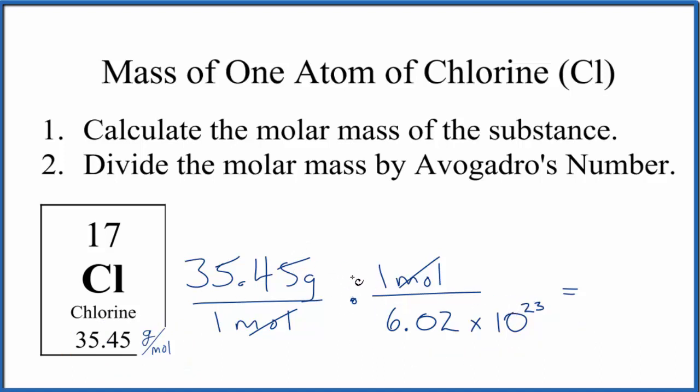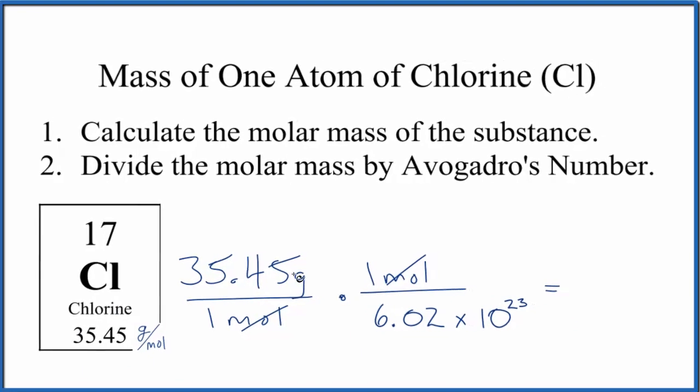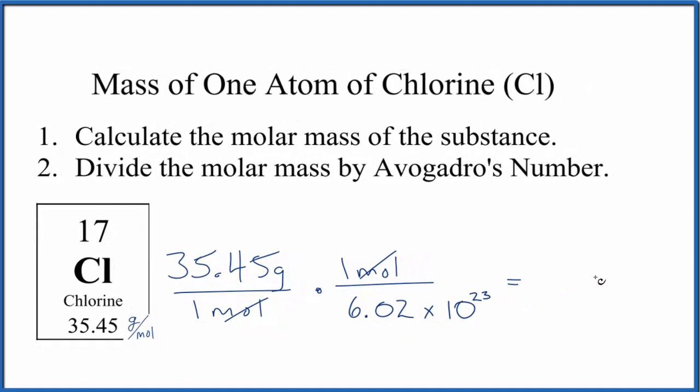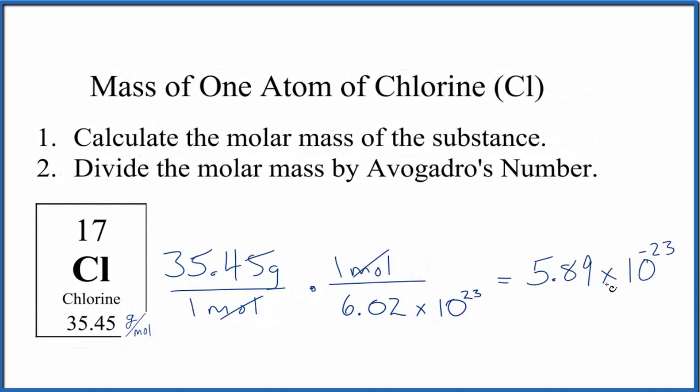When we divide 35.45 grams by Avogadro's number, we get 5.89 times 10 to the negative 23rd, and the unit is going to be grams.